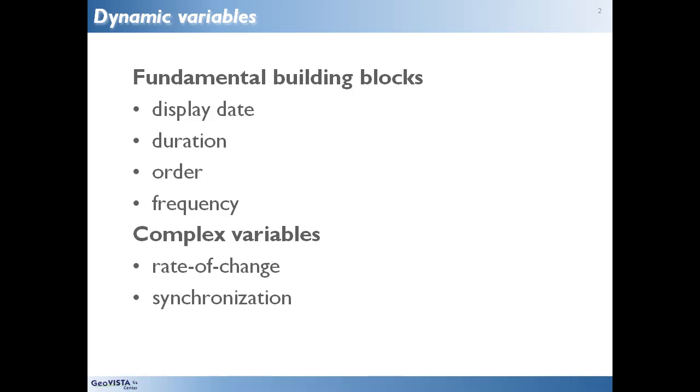Like visual variables, dynamic variables are attributes of animated sign vehicles that can be varied to depict some variation in the signified referent. In research spanning a couple of years back in the early 1990s, some colleagues and students and I identified six dynamic variables that can potentially be controlled by the display designer. Here I'll introduce four of these that I now consider to be fundamental building blocks of animated signification. Then I'll comment briefly on the two others that are more complex.